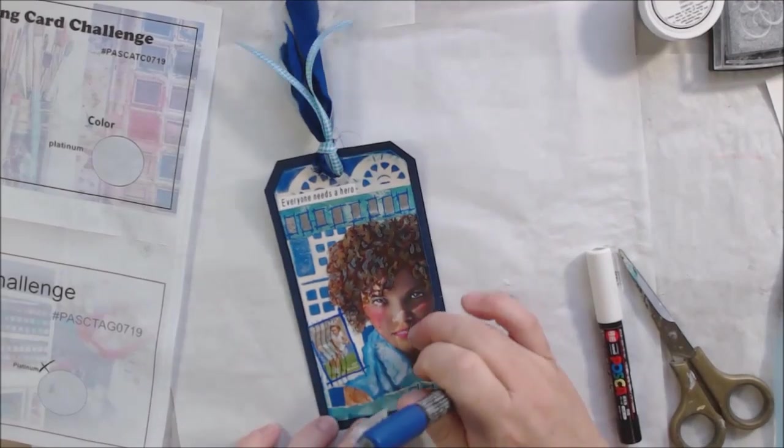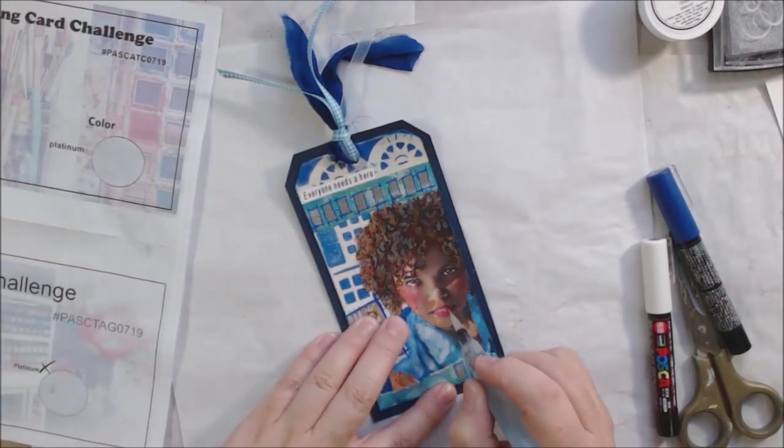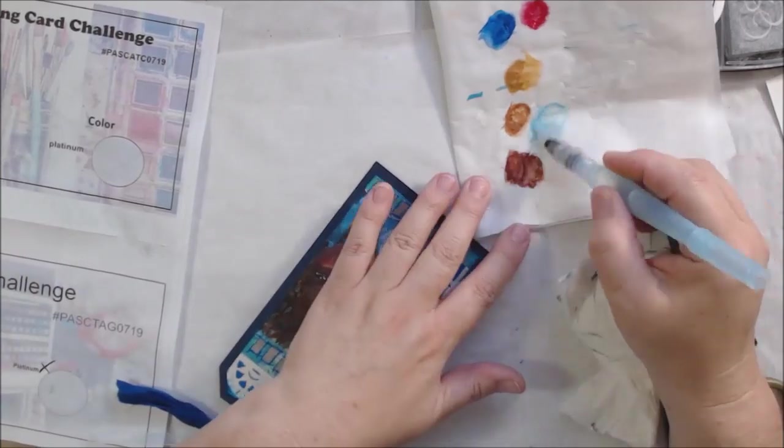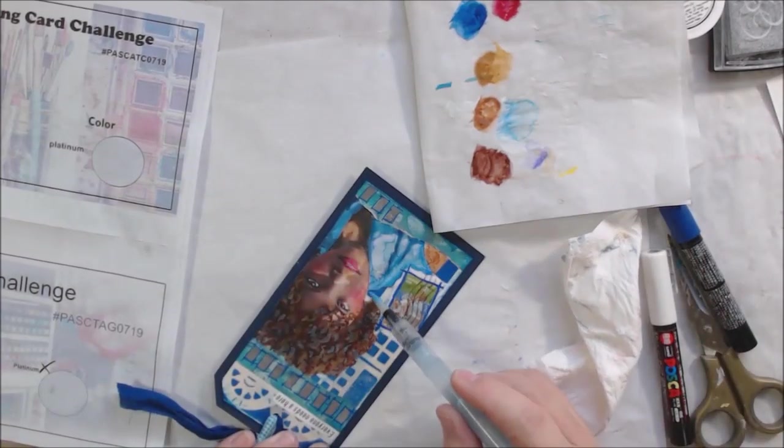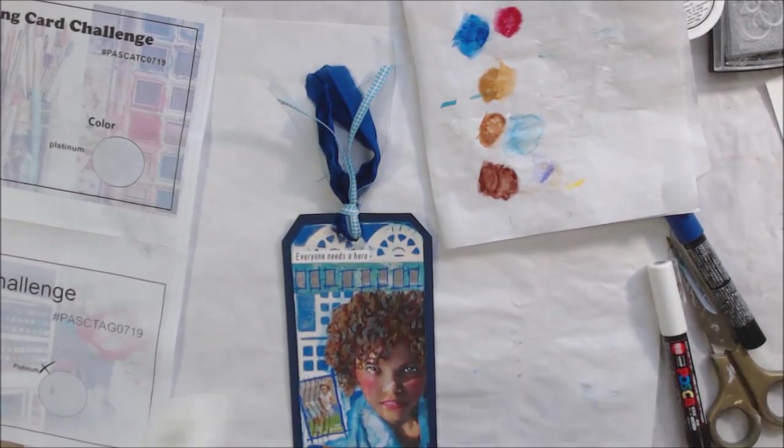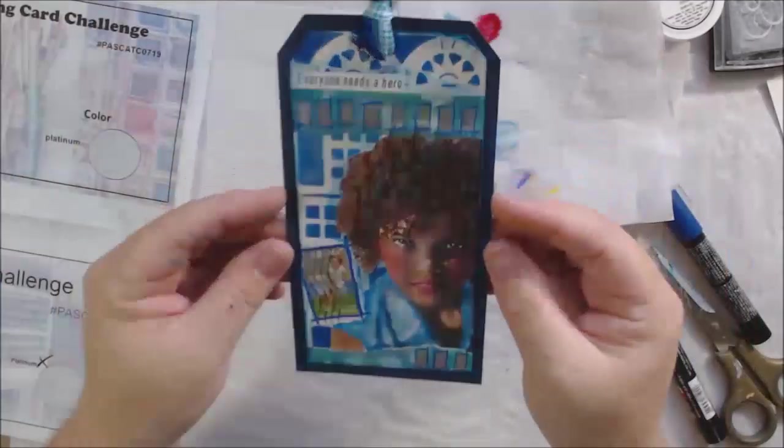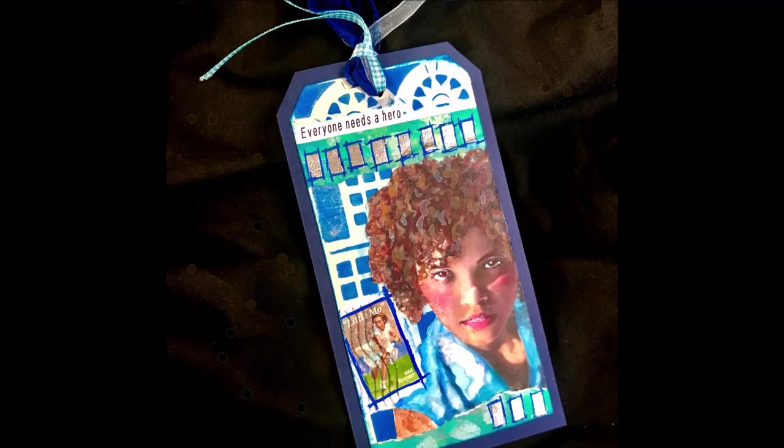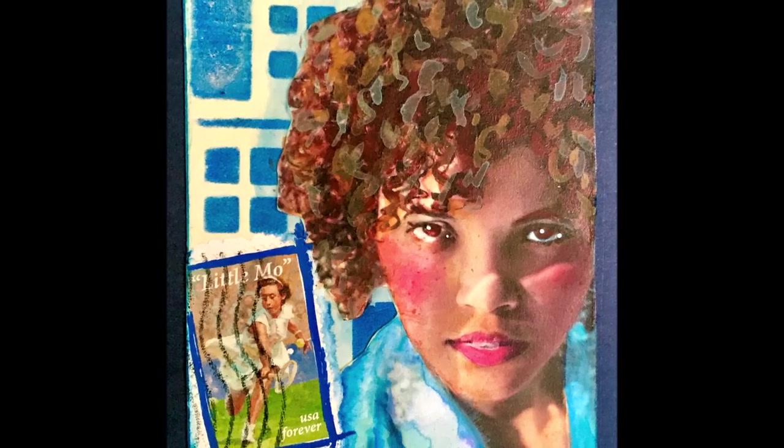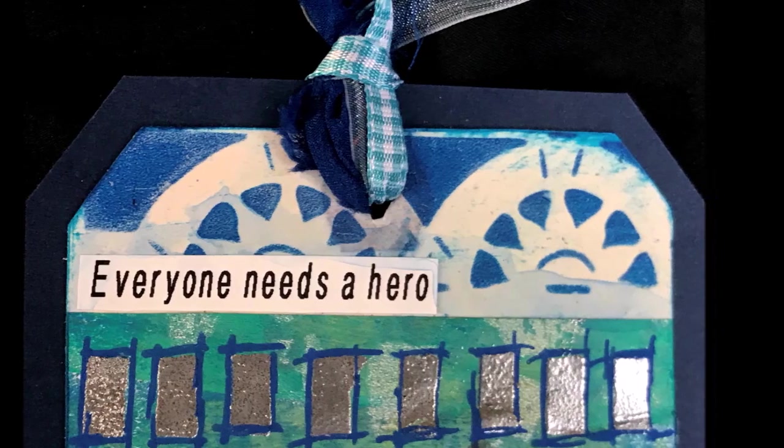I added a little bit of highlight with a white Posca pen. I'm also going to do the ATC challenge and that is coming up next in the video. I needed to add some shadow around the edge of the girl so that she blends in a little bit more, so I just use some of that leftover pigment off of my deli paper and my water brush to do that. That is my July 2019 altered tag challenge from the pick a stick challenge and here are some photographs. The photos always look so much nicer than the colors in the video because they are much higher quality.